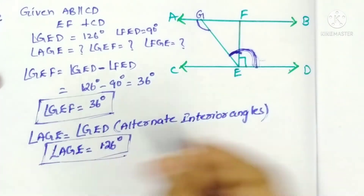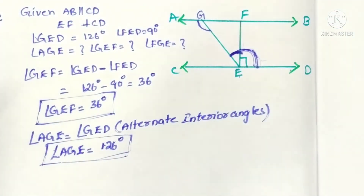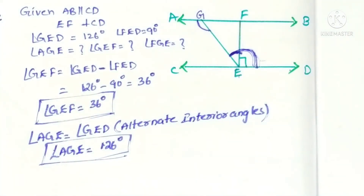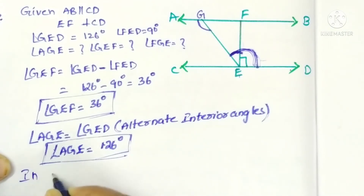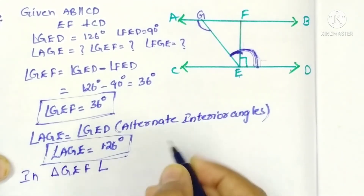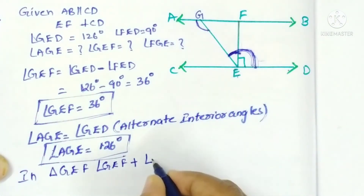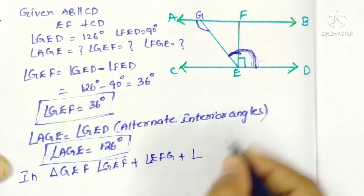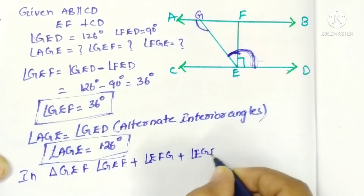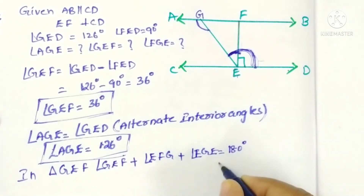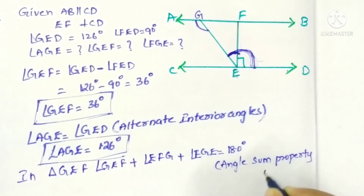Now we want to find angle FGE. Triangle GEF is formed, and by the angle sum property of a triangle, the sum of all three angles equals 180 degrees. So in triangle GEF: angle GEF plus angle EFG plus angle FGE equals 180 degrees — by the angle sum property of a triangle.